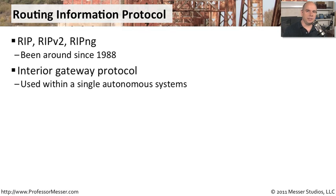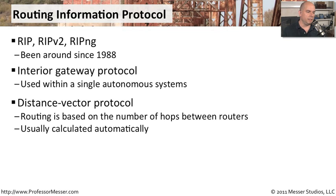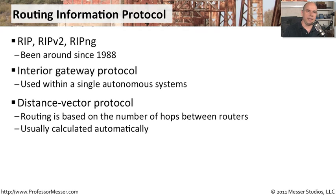This is also an interior gateway protocol, generally seen in single autonomous systems. It's a distance vector protocol as well, which means it determines how far away a network is based on how many hops you have to go through to finally get there. It calculates these number of hops automatically, and all the routers talk to each other using RIP to make that determination.